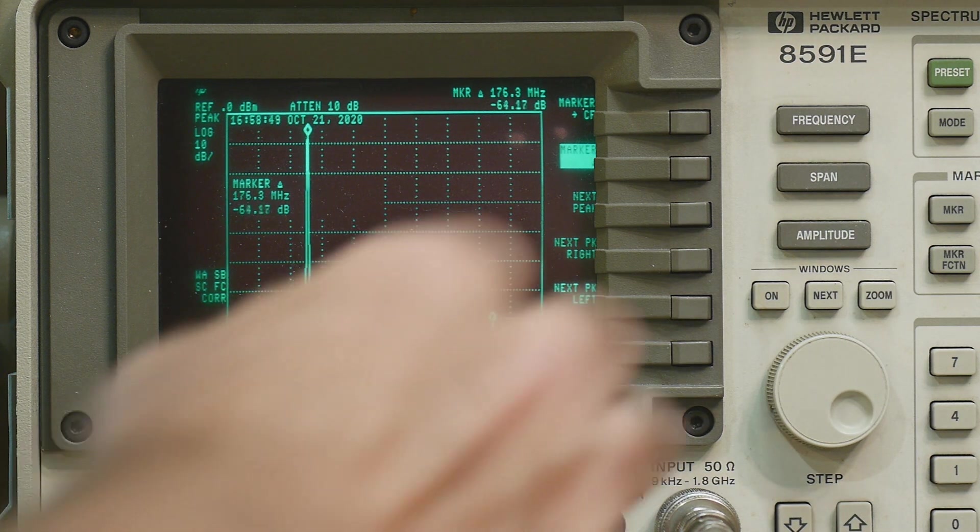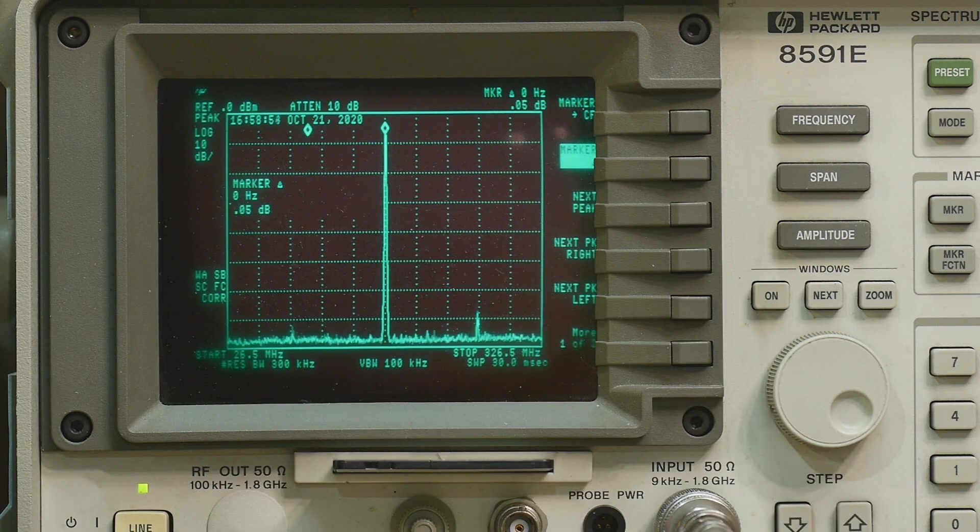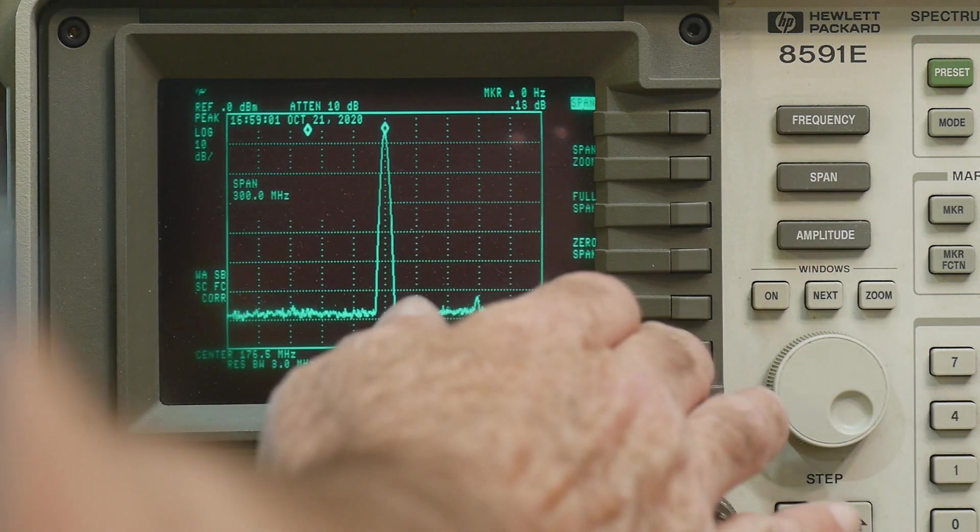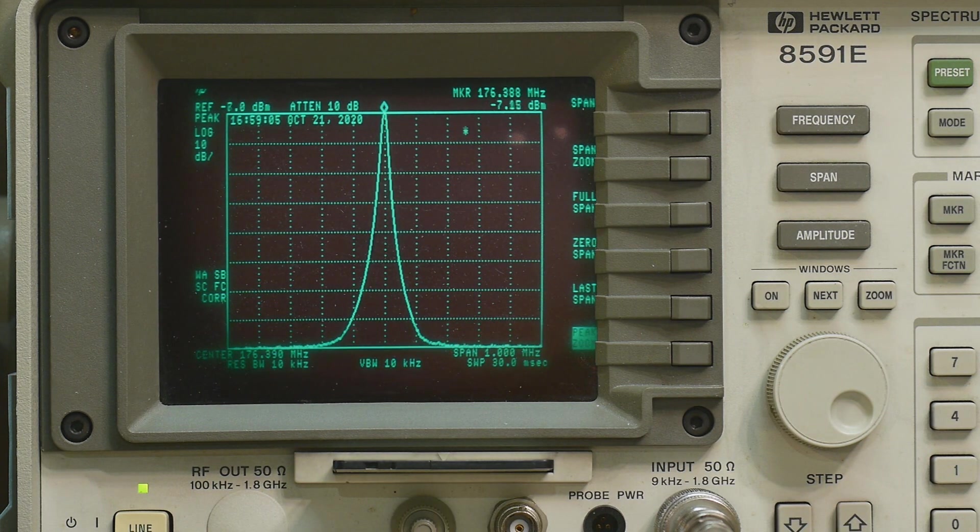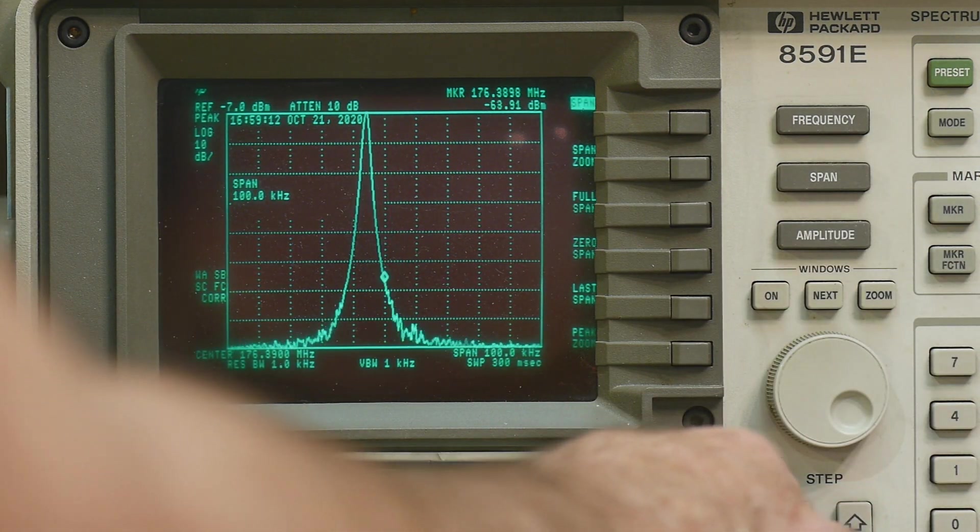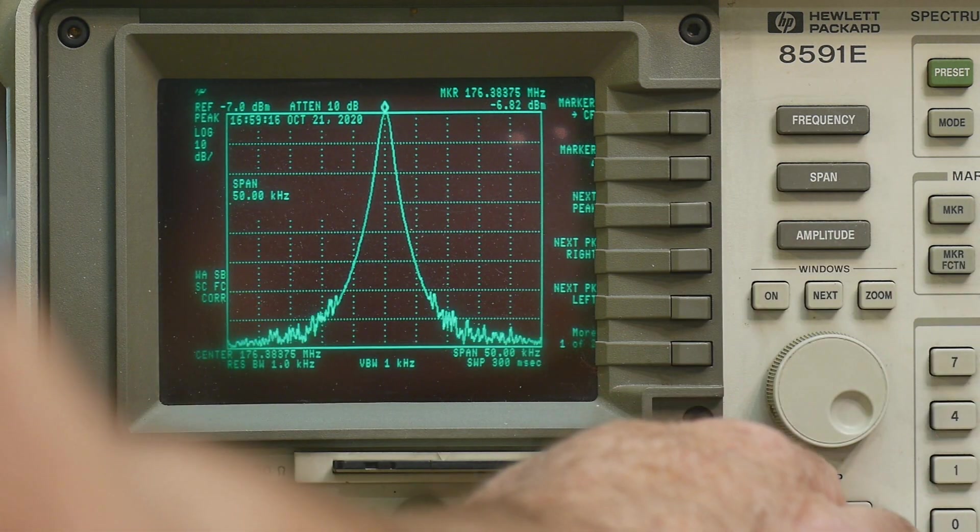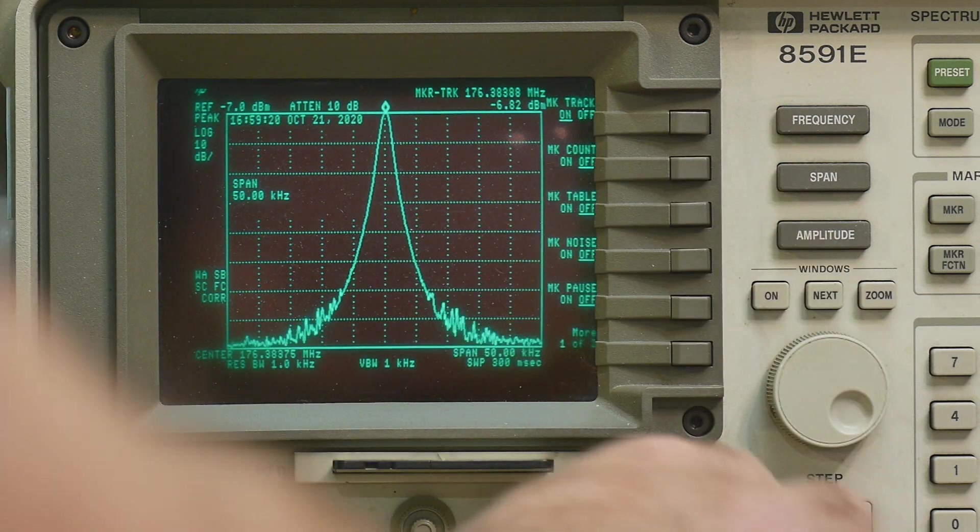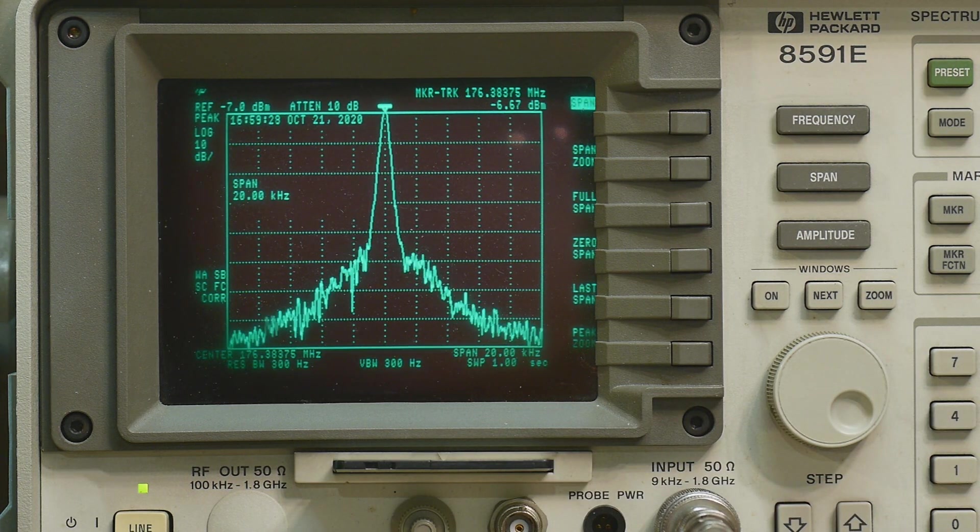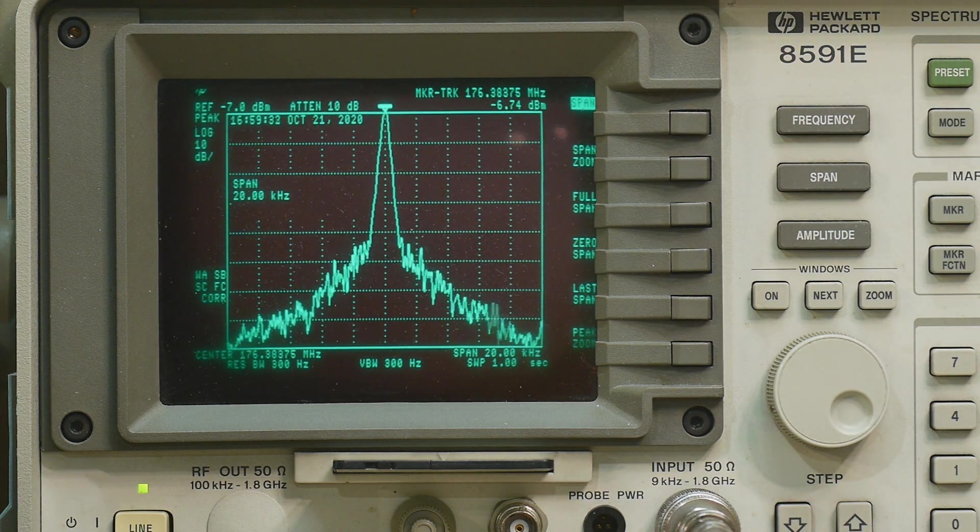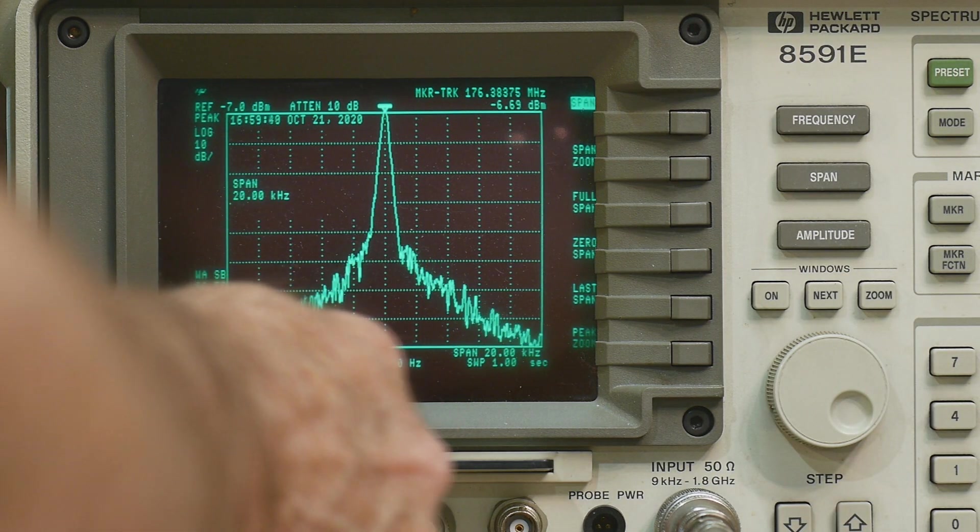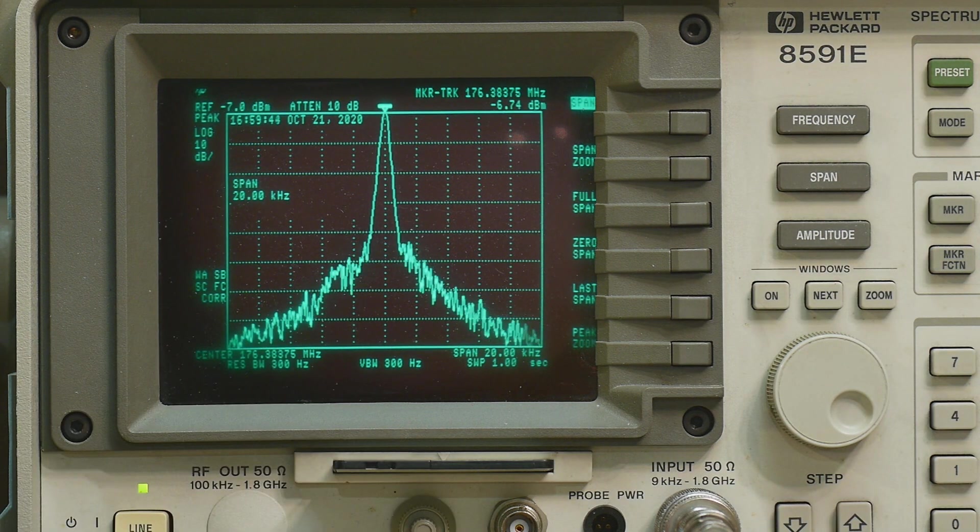Let's see if we can see any phase noise on this signal. We'll do a, let's see here. Let me go back to auto everything. And then let me zoom in on this peak. And then let's try to zoom in as far as we can. Put it back in the middle. Marker function and tracking on. And then we'll change our span some more. And we are, I can't read it from this angle. Our span is 20 kilohertz.